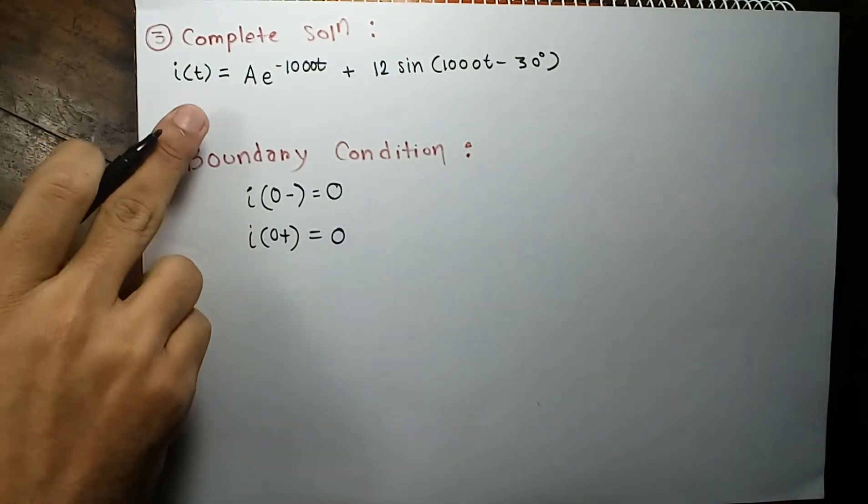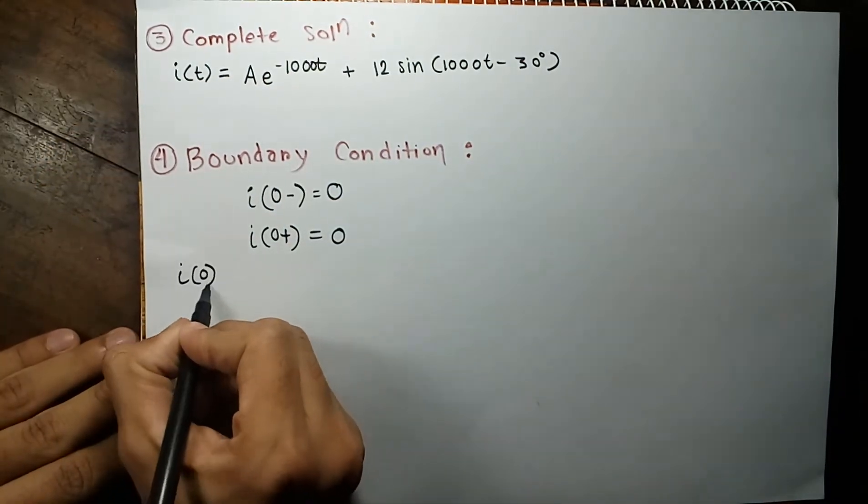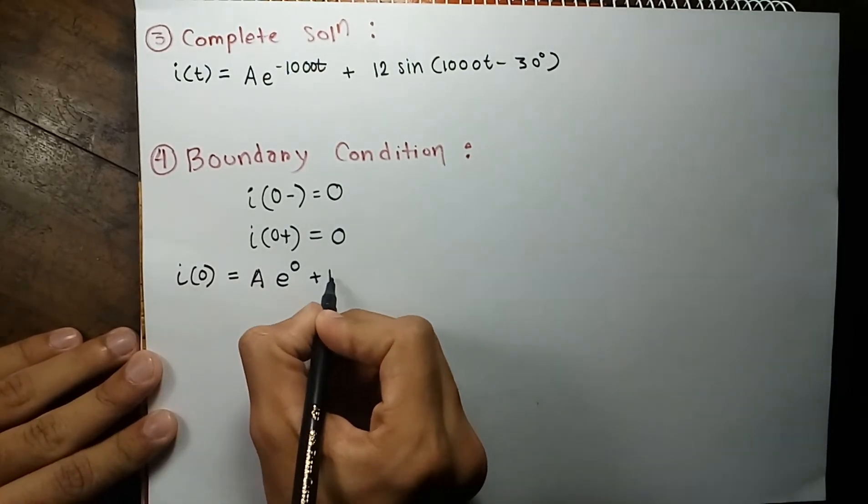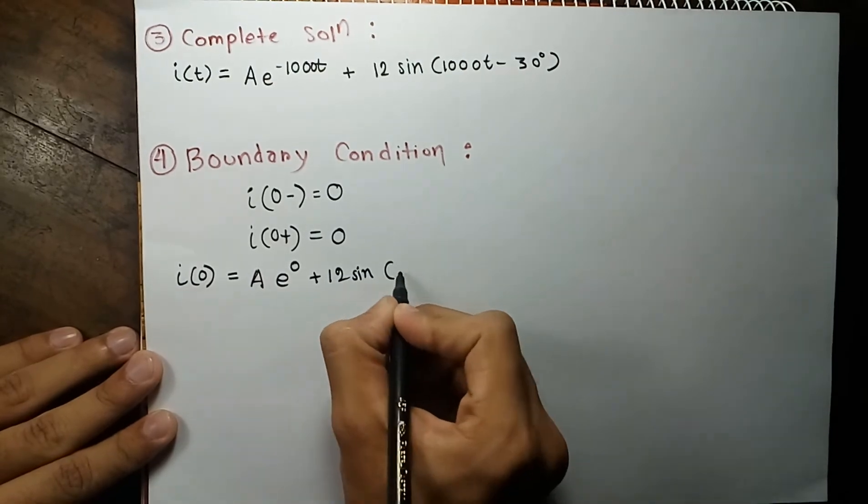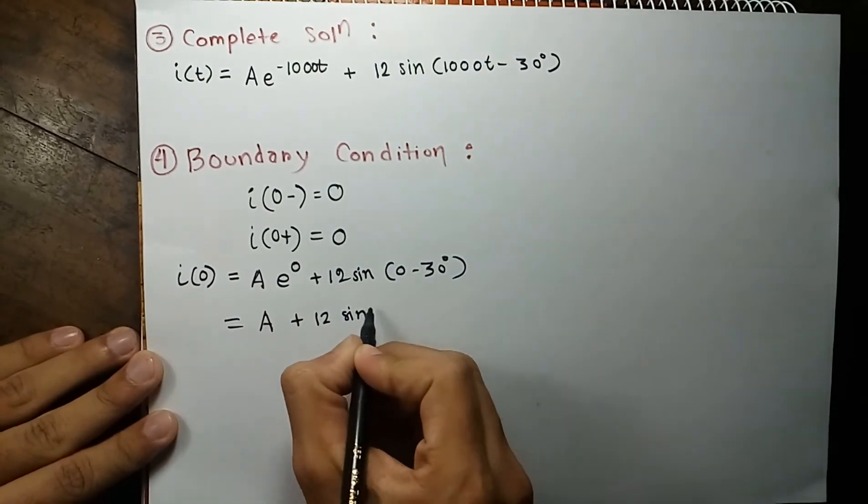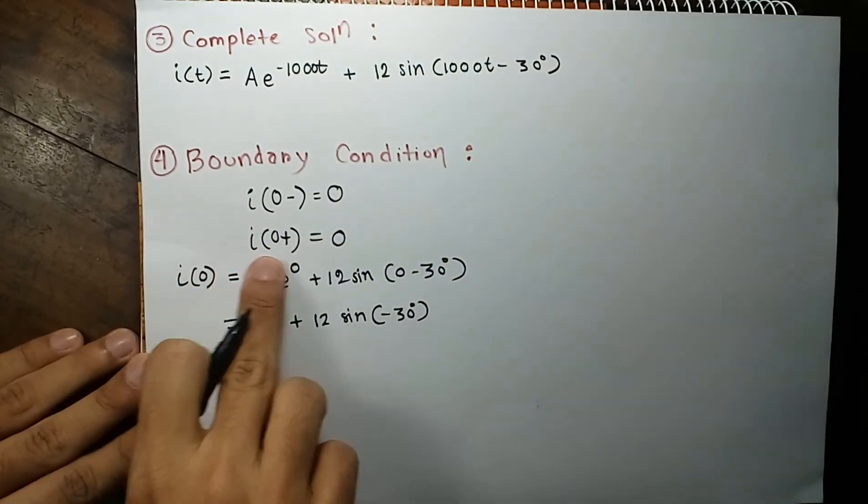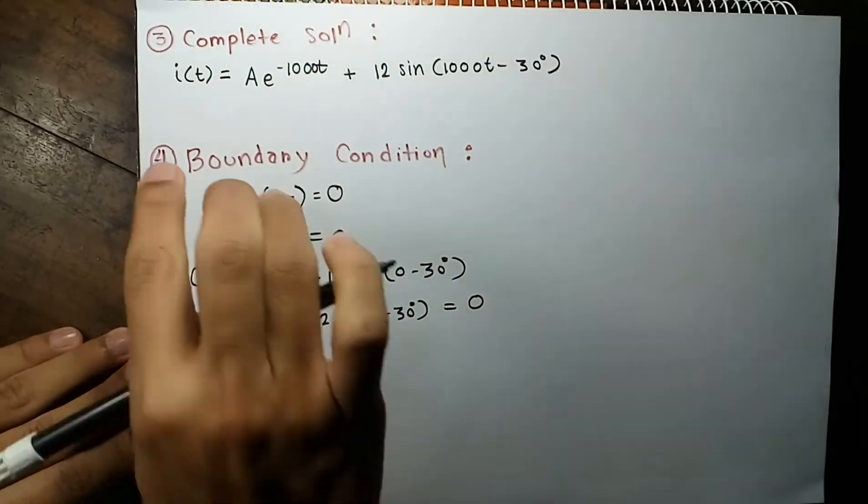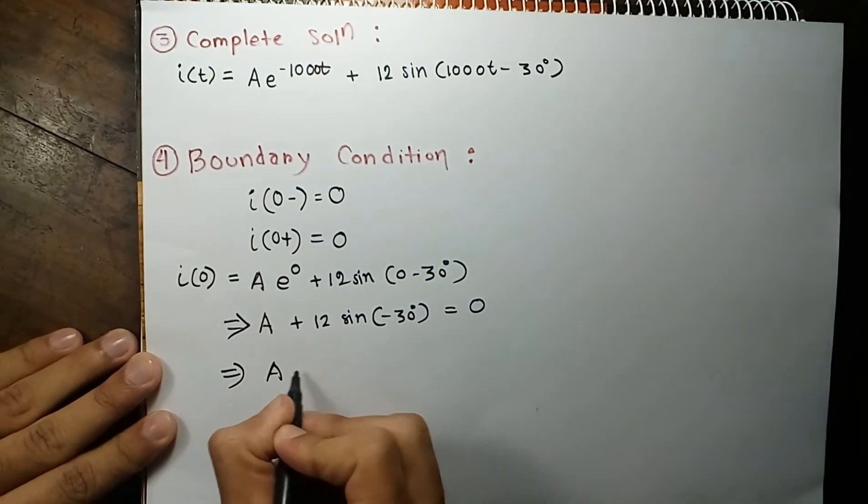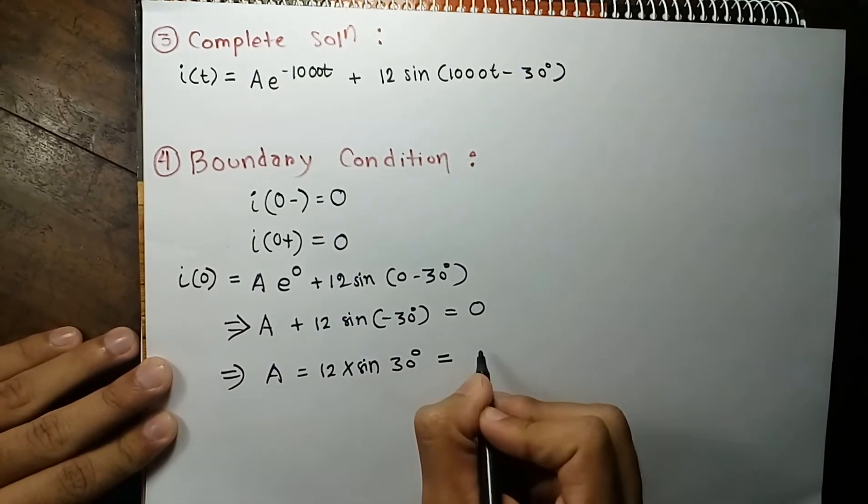Now we will put time equals to 0 in our complete solution. It will come out to be I putting time value 0, A e to the power 0 plus 12 sine of 0 minus 30 degree. Or that equals to A plus 12 sine of negative 30 degree. And that value has to equal to this 0 value if it has to be the complete solution. So it turns out A equals to 12 into sine 30 degree. And A value becomes simply 6.